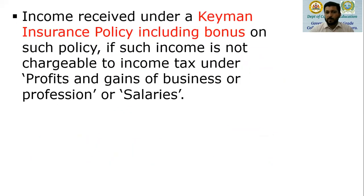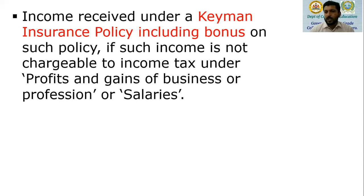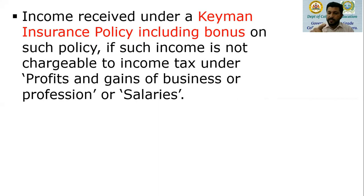Then, income received under a keyman insurance policy, including bonus. A keyman insurance policy is where the employer pays insurance on only a few key employees — important personnel in the organization, not all employees. If such key employees, on retirement or on the maturity of the insurance policy, receive money from the insurance company including bonus, that amount is taxable under other sources. But if insurance is taken on the lives of all employees, whatever they receive on maturity is not taxable. Since this is a keyman policy — taken on key, important employees only — any amount received by them on maturity will be taxable under other sources, if not taxable under profits and gains from business or salaries.